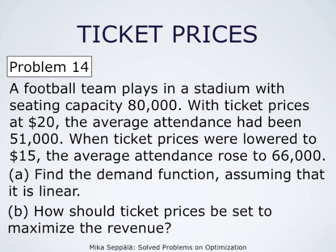A football team plays in a stadium with a seating capacity of 80,000. With ticket prices at $20, the average attendance had been 51,000. When ticket prices were lowered to $15, the average attendance rose to 66,000.